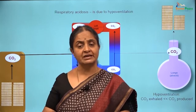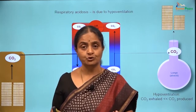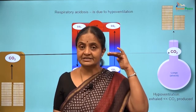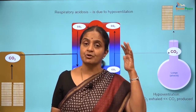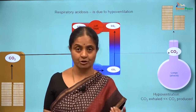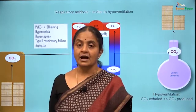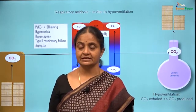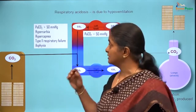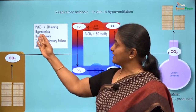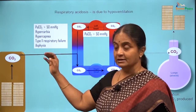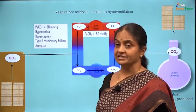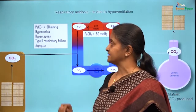Why should there be an increase in carbon dioxide? Maybe the central chemoreceptors have reset themselves to respond to a higher level of carbon dioxide. There are other terms which refer to this state: respiratory acidosis can also be referred to as hypercarbia, hypercapnia, type 2 respiratory failure, or asphyxia.